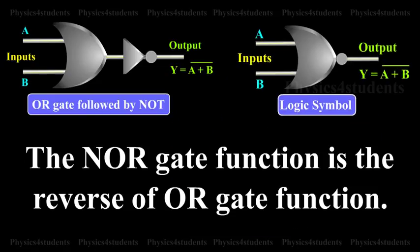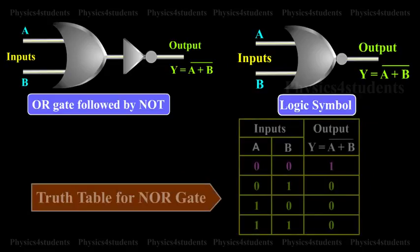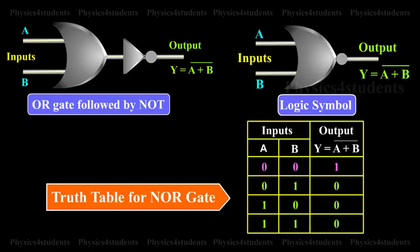The NOR gate function is the reverse of OR gate function. A NOR gate will have an output only when inputs are zero. In a NOR gate, output is high only when all inputs are low. The NOR operation is represented in table.